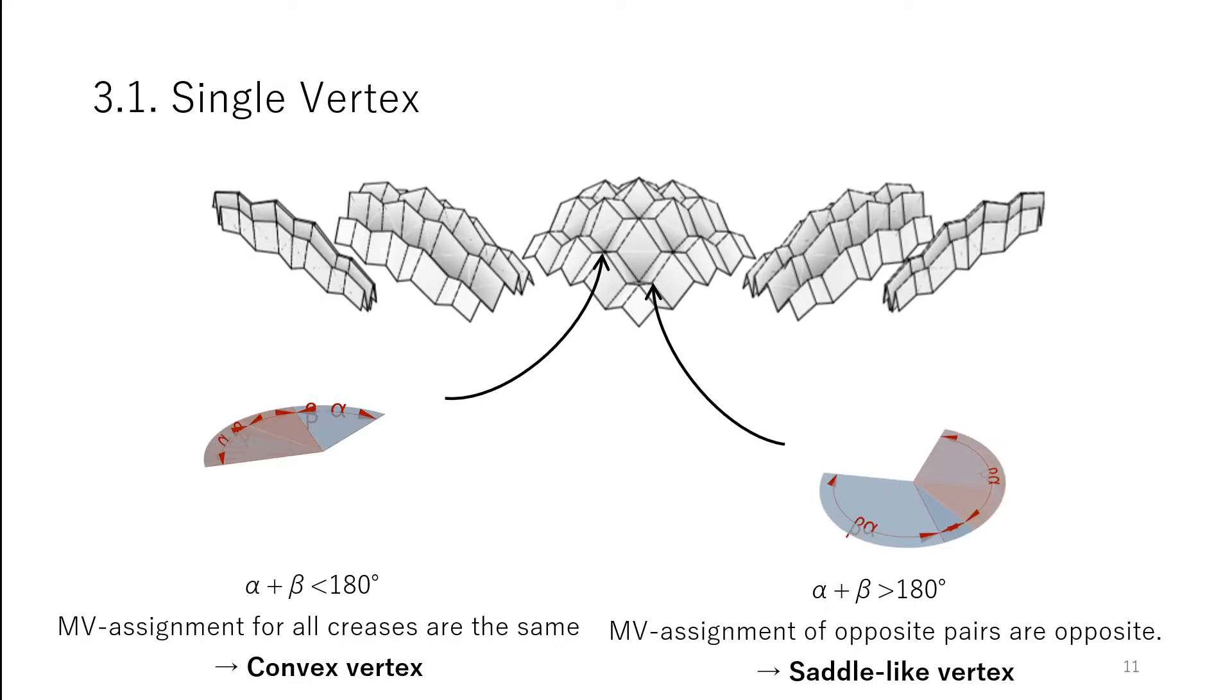For thickness accommodation based on the axis-shift method, we first classify the vertices based on the mountain and valley assignment, or MV assignment, of the opposing pairs.